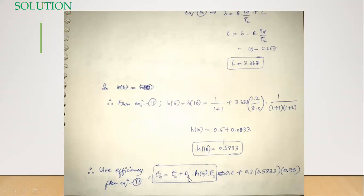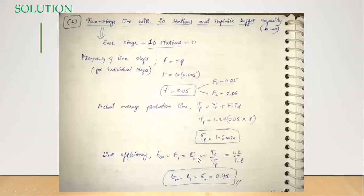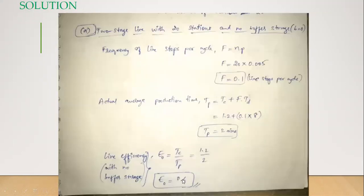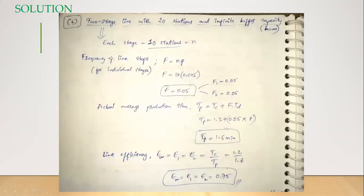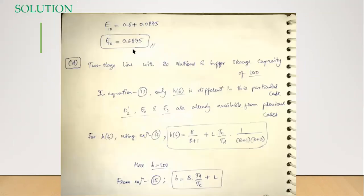The formula is: Eb equals E0 plus d1-dash times h(b) times E2. Substituting, we get the efficiency for a buffer storage capacity of 10 as 0.6875. Observing the results: for no storage buffer capacity we had 0.6 (60%), for an infinite one we had 75%, and now for 10 we are getting 68% — which is in between those two.